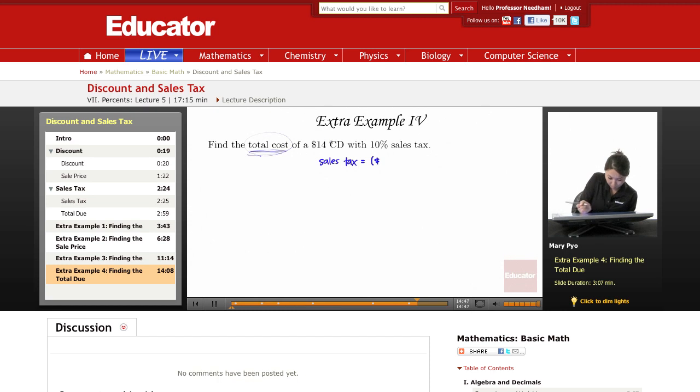So, the total due or the cost is going to be $14 times the sales tax rate, which is 10%. Again, change it to a decimal.